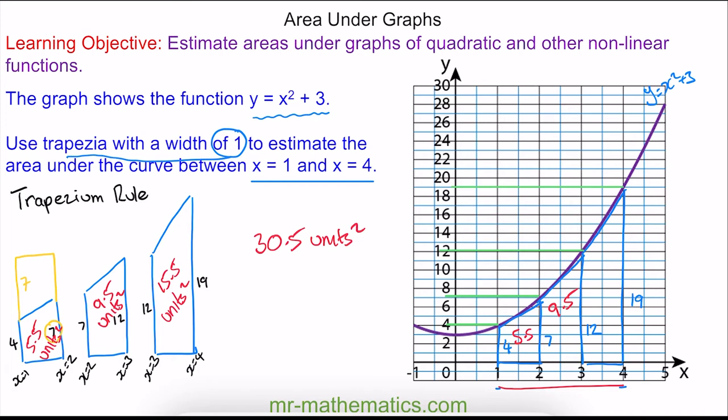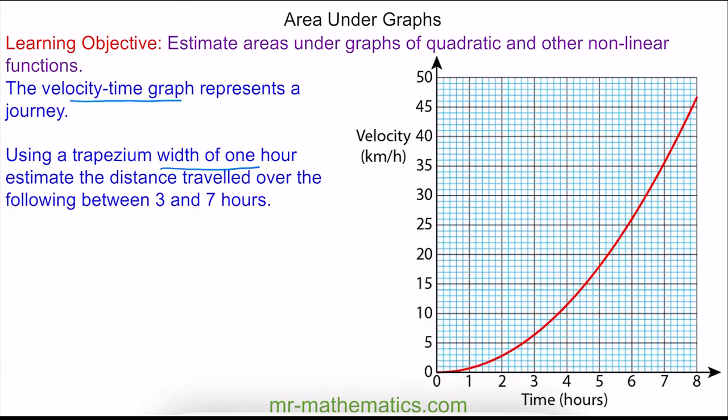Okay, let's try the next question. In this question, we have a velocity time graph. And using a trapezium width of 1, we've been asked to estimate the distance travelled over the course of between 3 and 7 hours.